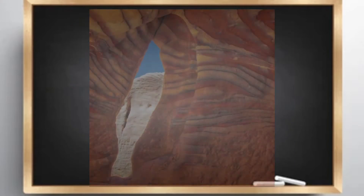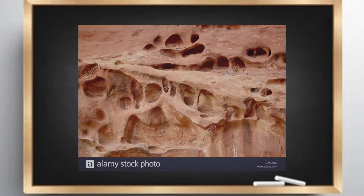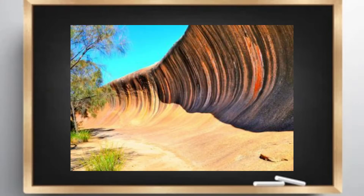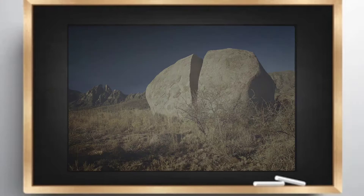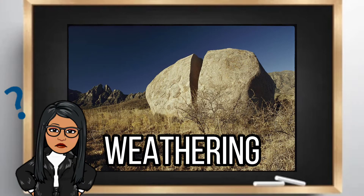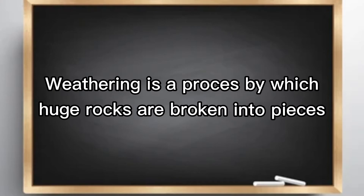The Earth's crust transforms from one composition to another through a constant process called weathering. What is weathering? Weathering is a process by which huge rocks are broken into pieces.